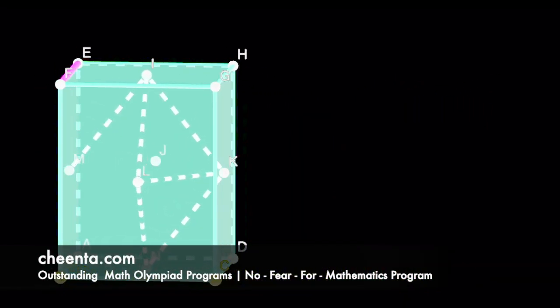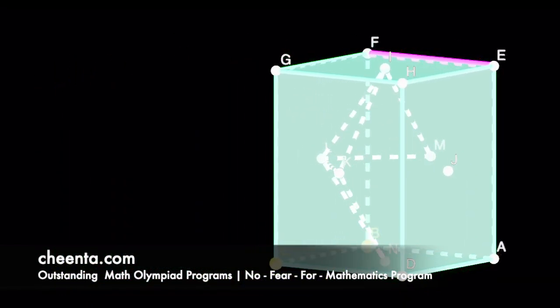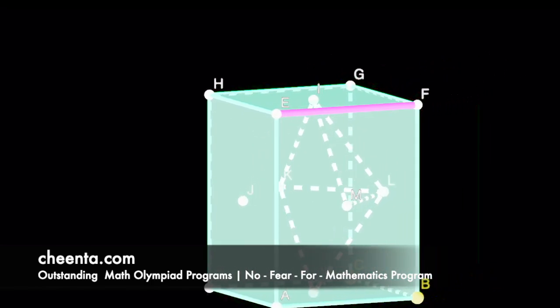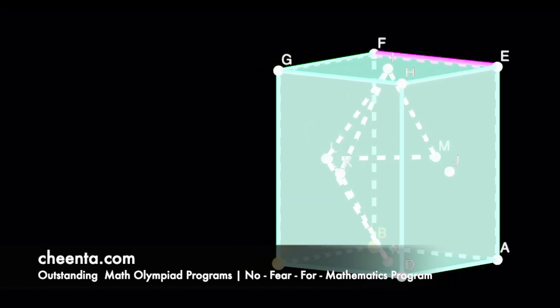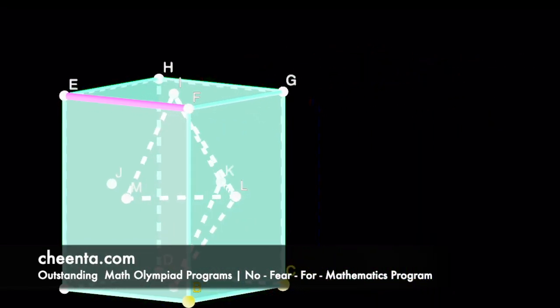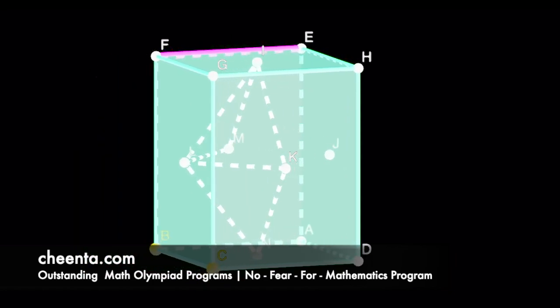And connect pairs of centroids if the corresponding faces are adjacent. That is, repeat the same process with the internal shape. Can you tell me what shape you get inside that?